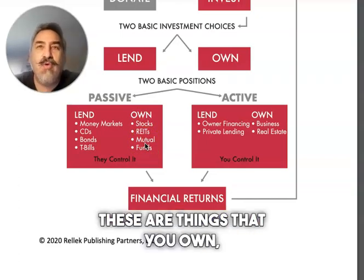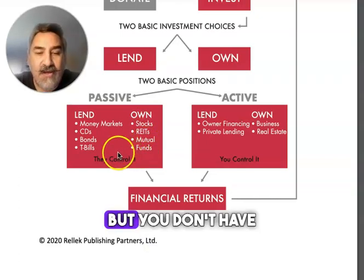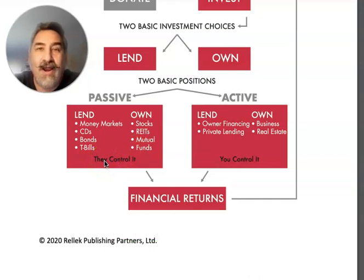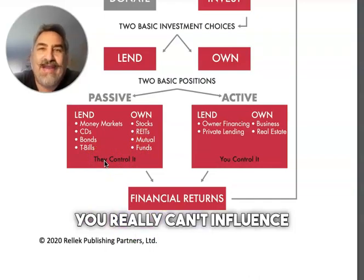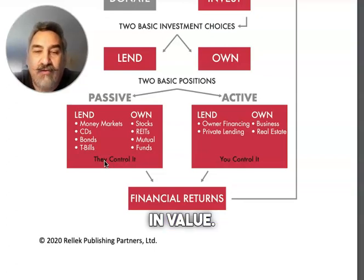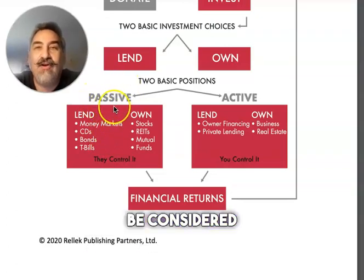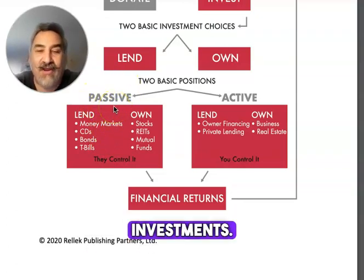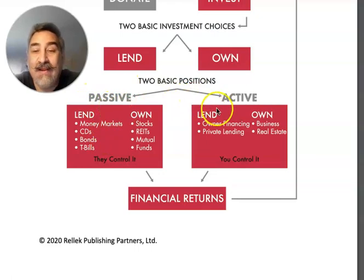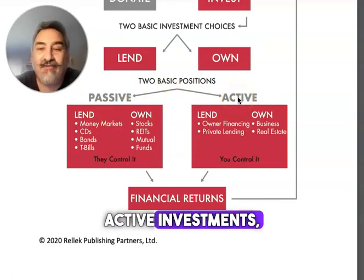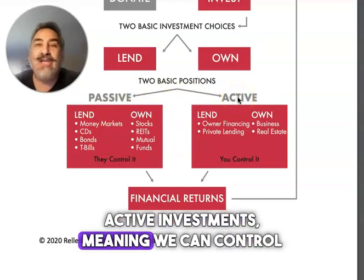These are things that you own, but you don't have a lot of control over. You really can't influence your stock to go up in value. That's why these would be considered passive investments. On the other side, we have active investments, meaning we can control them.